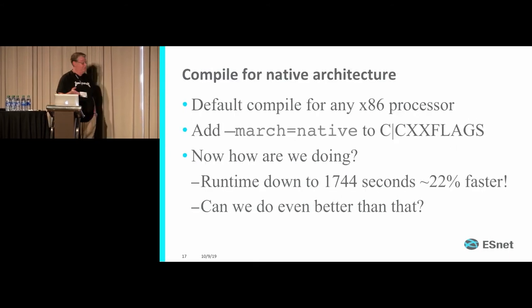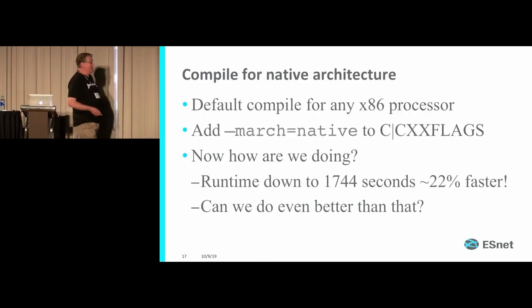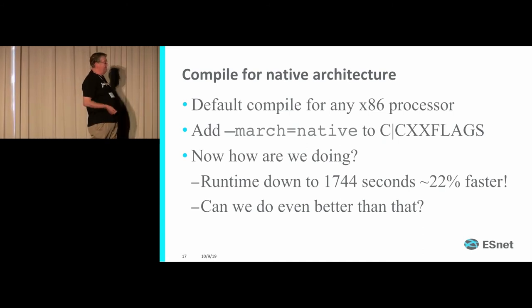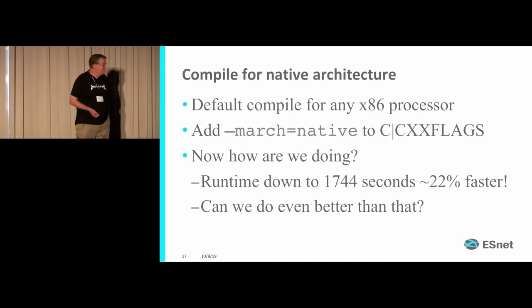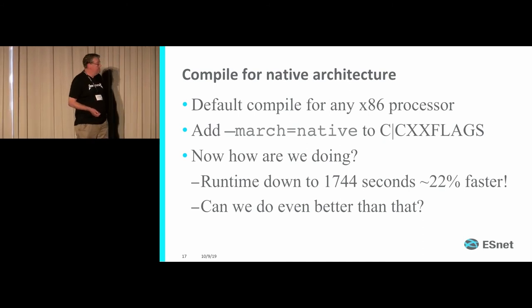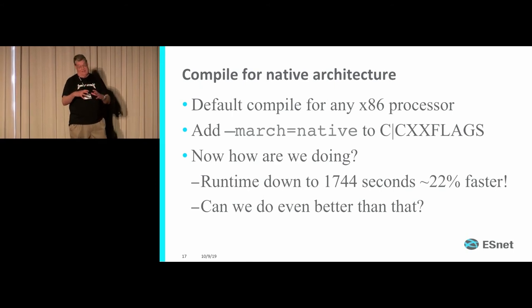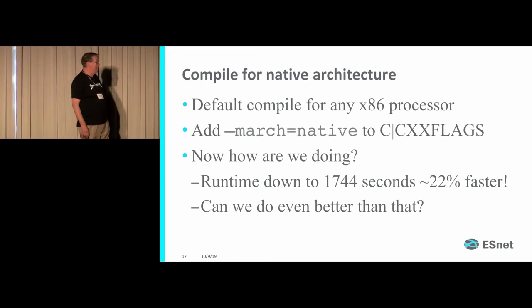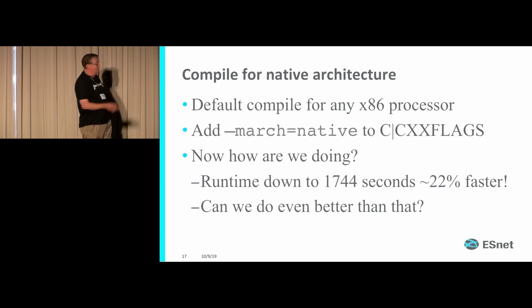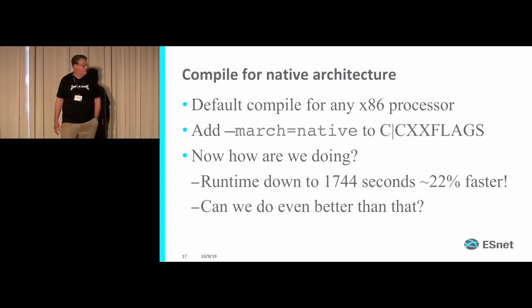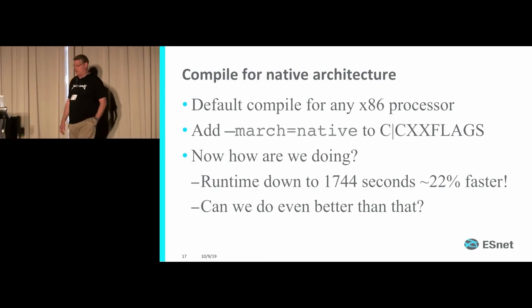You can also do -march=native, which compiles specifically for the host you're on. With that, we're now 22% faster than where we started.